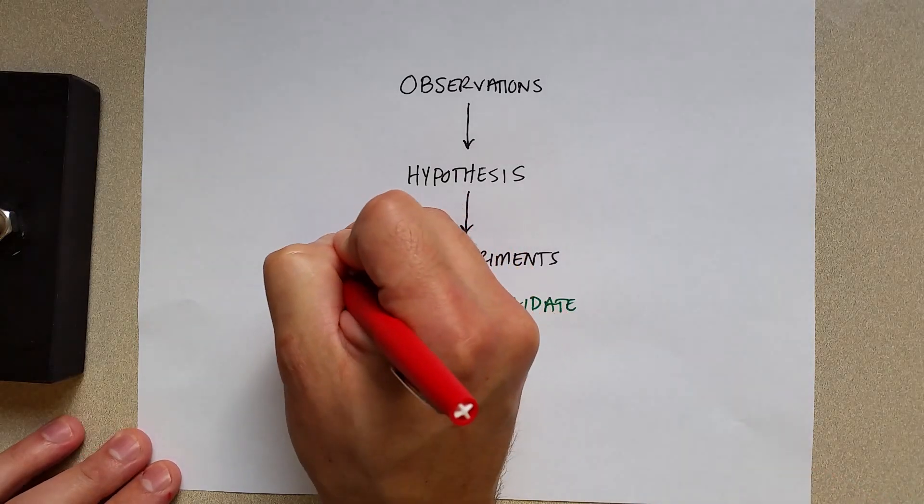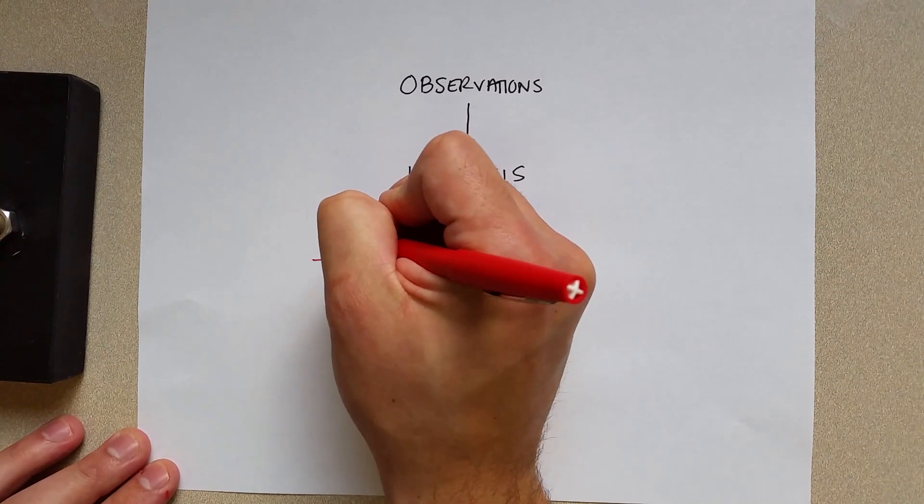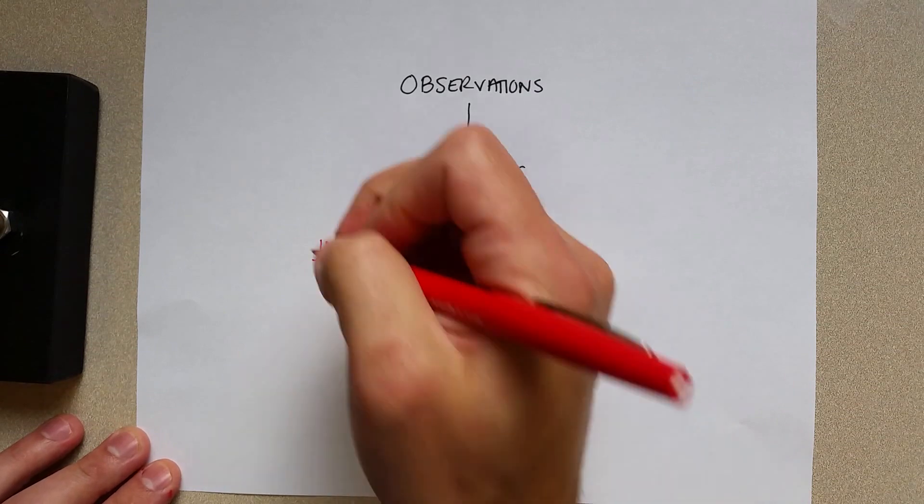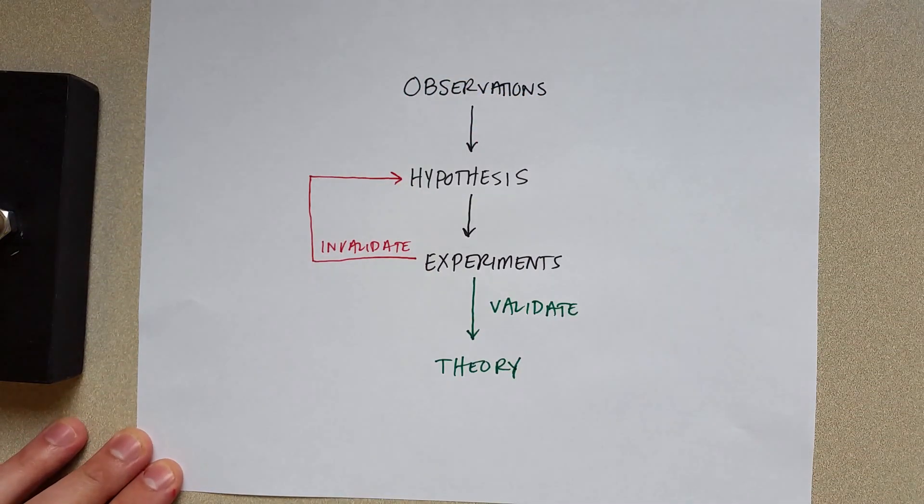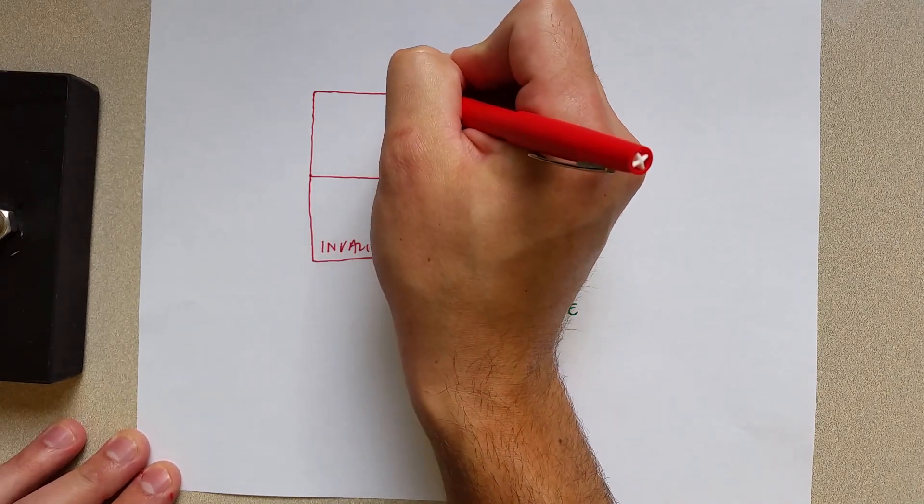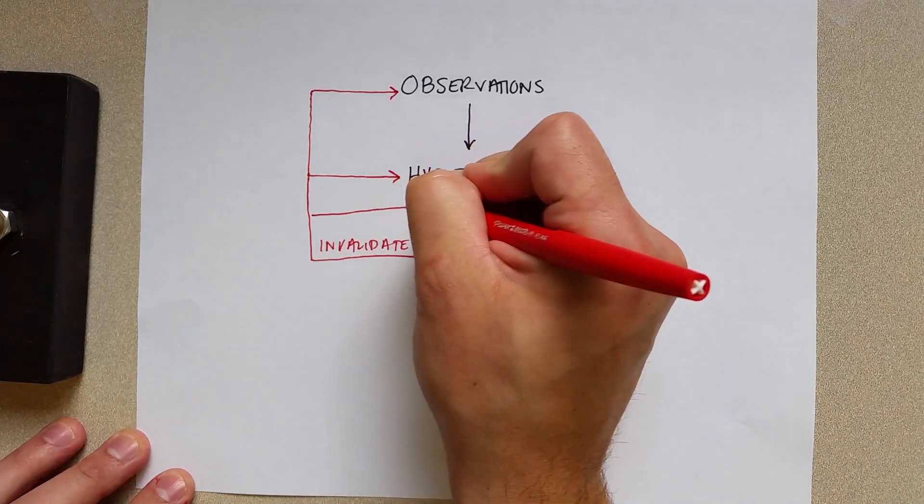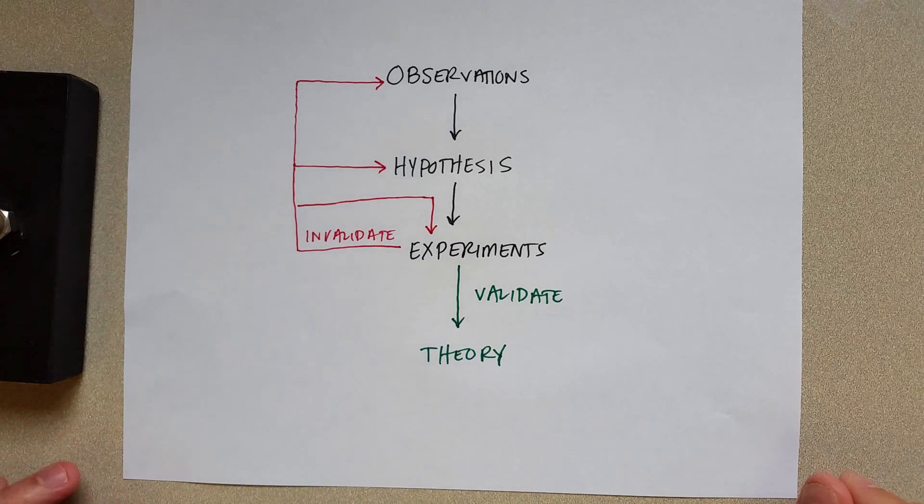If the experiments invalidate the hypothesis, we sort of have to go back to the drawing board. We can form a new hypothesis based on our experimental evidence. We might need to go back to the beginning and draw more observations, or we might just have to do more experiments if the experimental results were inconclusive about our hypothesis. We might have to run more tests to see if the hypothesis is in fact true.